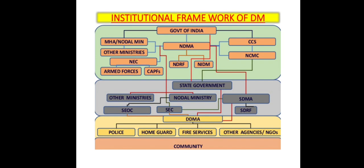The institutional level framework for Disaster Management shown in the flowchart has the Government of India at the top. Below that: Nodal Minister, other ministries, NECs, Armed Forces, CAPFs, and then NDMA — below which are NDRF, NIDM, CCS, and NCMC.